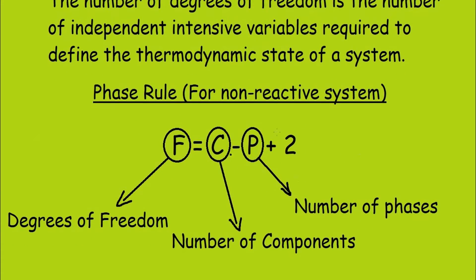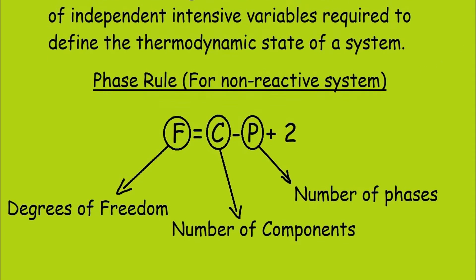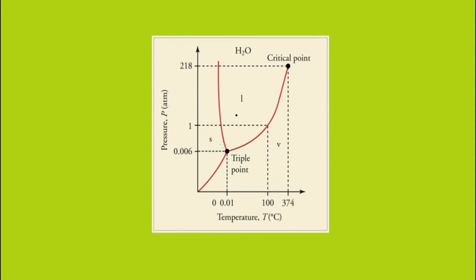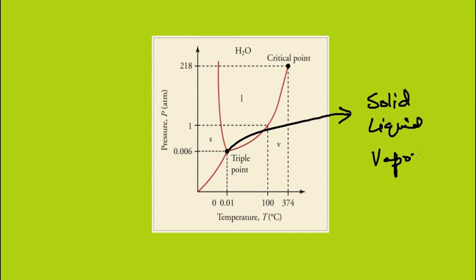To explain this phase rule, let me take the example of the triple point of water. This is the pressure-temperature diagram for water, and this is the triple point. At the triple point, the solid, liquid, and vapor all coexist.